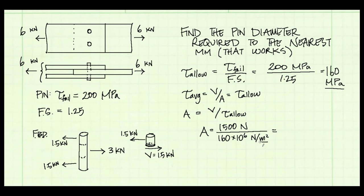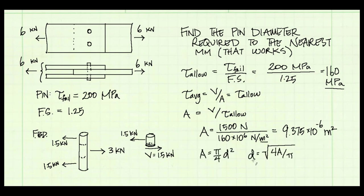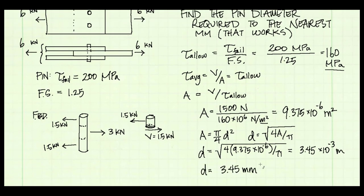Converting to millimeters, the area is small. Solving for diameter using d = √(4A/π) gives 3.45×10⁻³ m, or 3.45 mm. Since this is a minimum diameter, we cannot round down using standard mathematical rounding rules — doing so would give a smaller pin that could fail. We must round up to the nearest millimeter, so the required pin diameter is 4 mm.